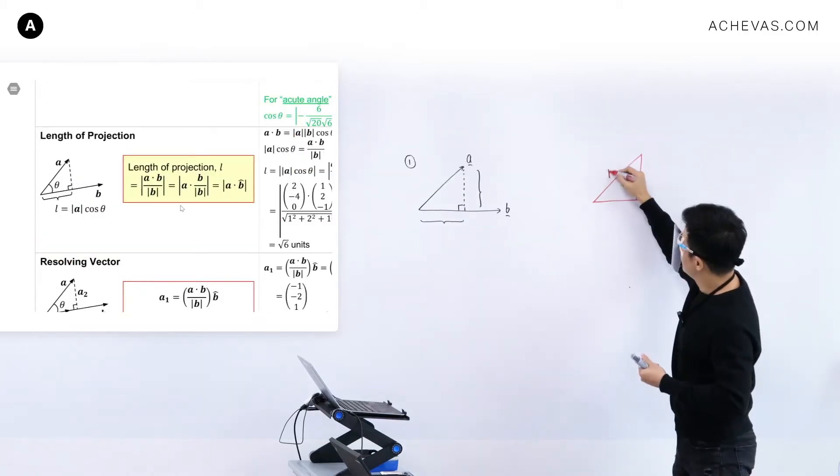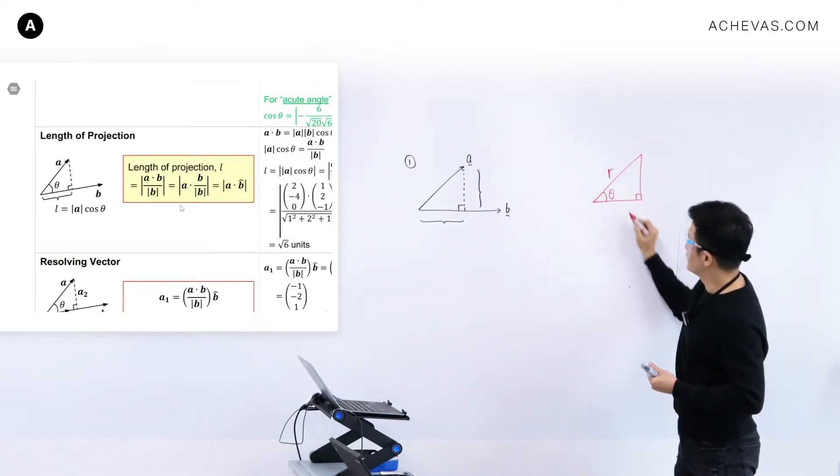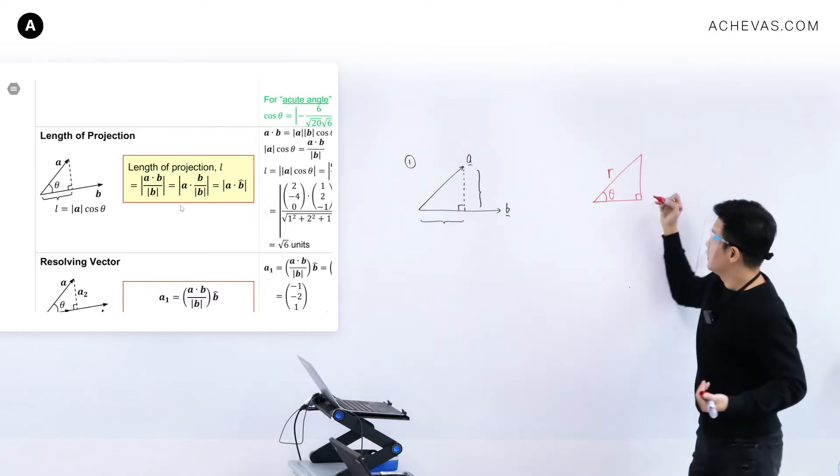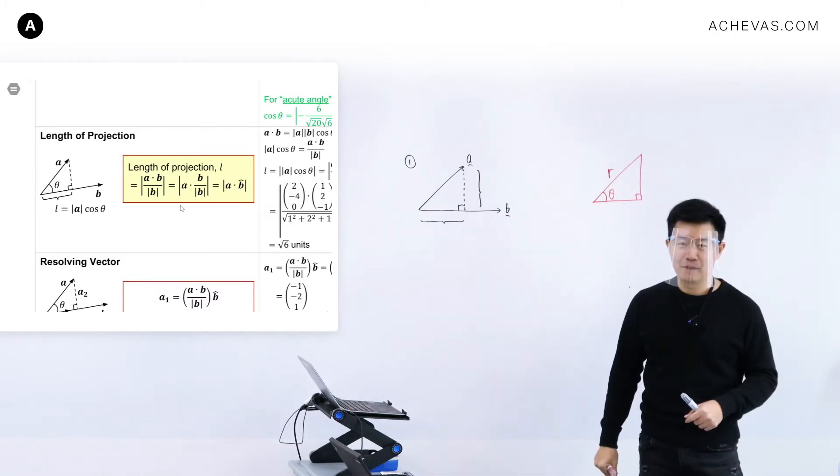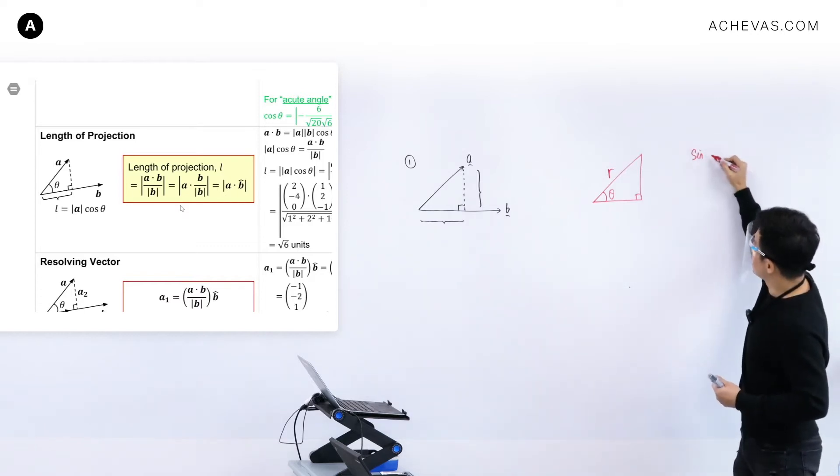If I were to tell you that this is r, if I were to tell you that this is theta, Raphael, how do you think you will find this? Okay, so Raphael says that he is going to use sine.